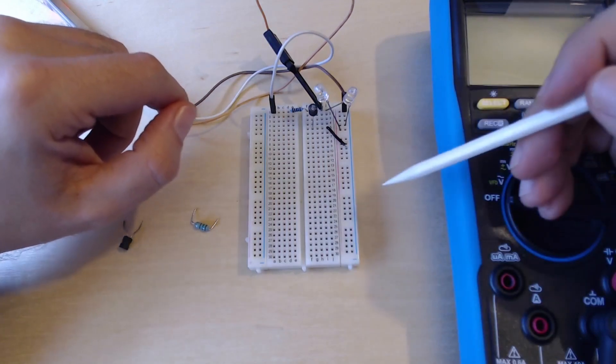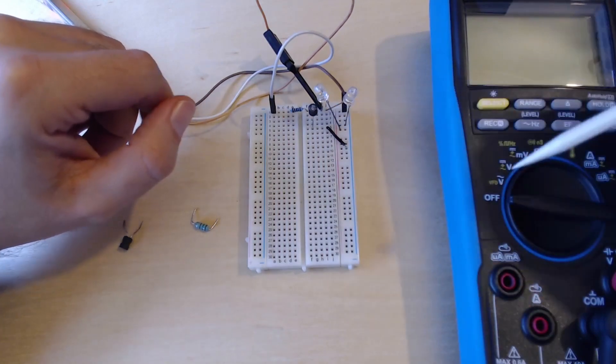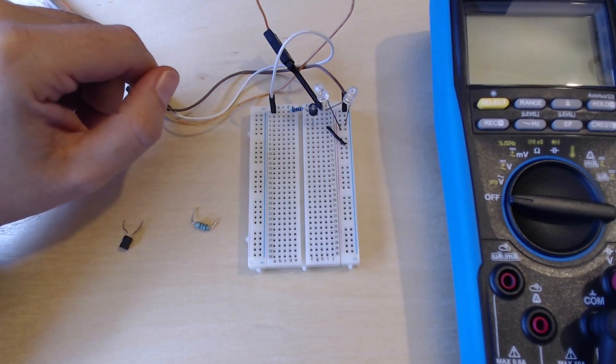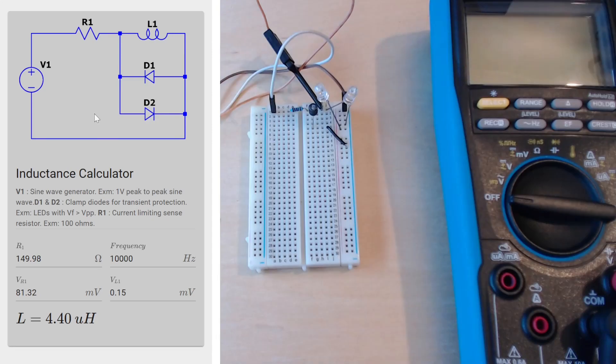Let me talk a little bit about the software tool that we've used and how it works. When we input the exact resistance of our resistor and the voltage drop across the resistor, the tool first calculates the current across the resistor using Ohm's law.